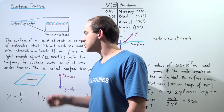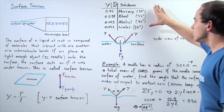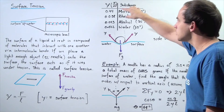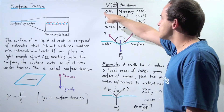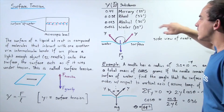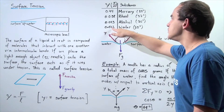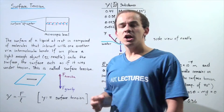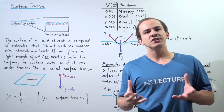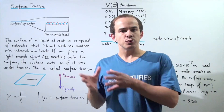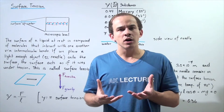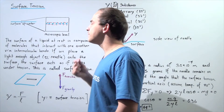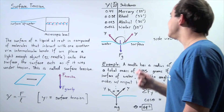Here we have a table of surface tension values for several substances. For example, mercury at 20°C has a surface tension of 0.44 newtons per meter, while water at the same temperature has a value of 0.072 newtons per meter. Mercury has a higher value than water because the intermolecular forces holding mercury molecules together are stronger than those holding water molecules together — since surface tension is defined by intermolecular bonds.